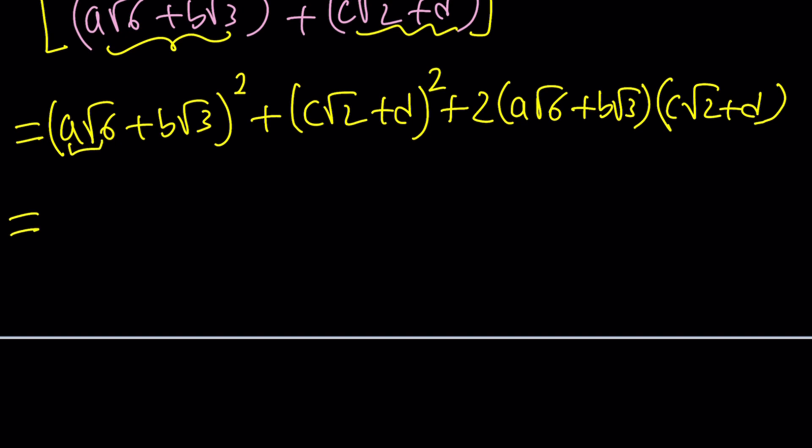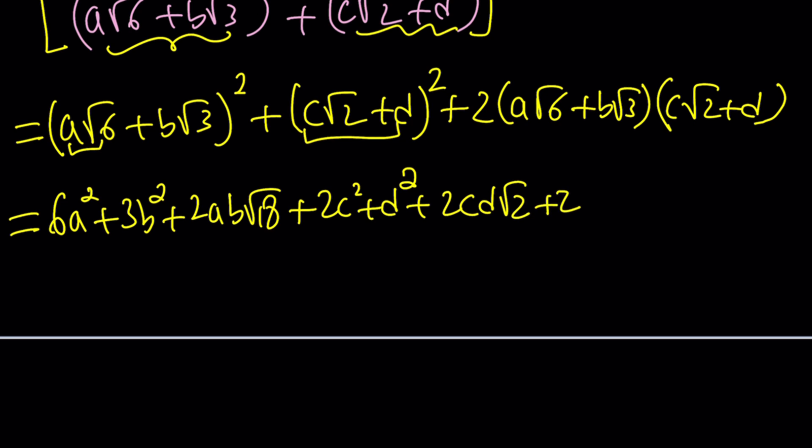Now let's go ahead and expand each of these. If you square this, you get, again, using the m plus n formula one more time, 6a squared plus 3b squared plus 2ab root 18. This is 2c squared plus d squared plus 2cd root 2. And then plus here, there's going to be 4 terms. That's going to be ac root 12 and then ad root 6, and then bc root 6, plus bd root 3.